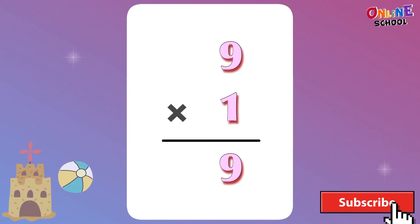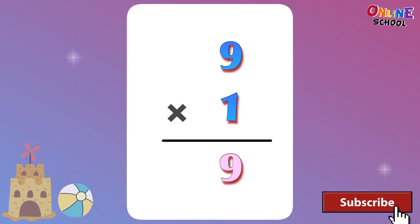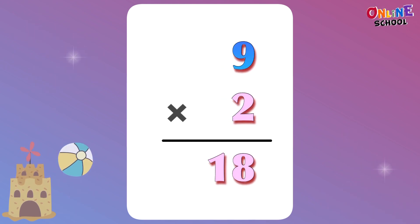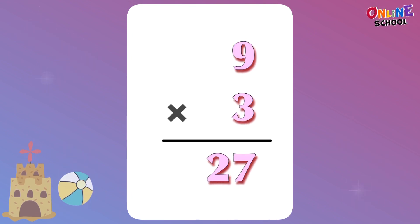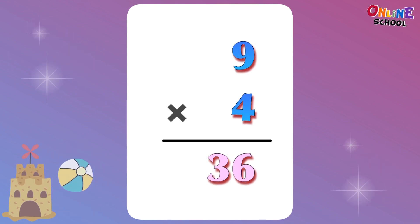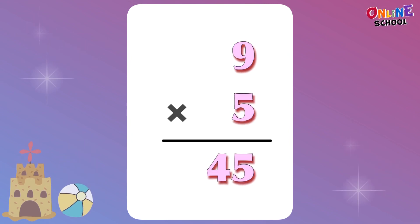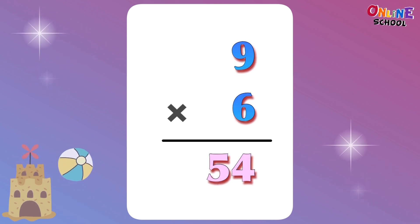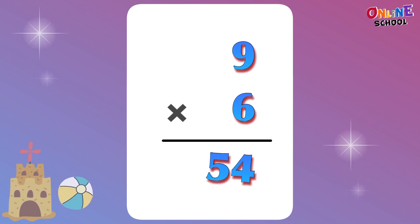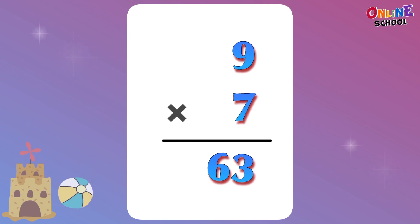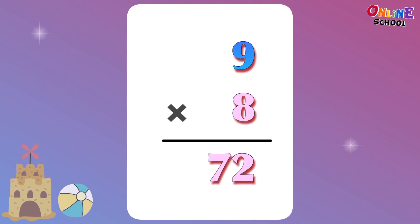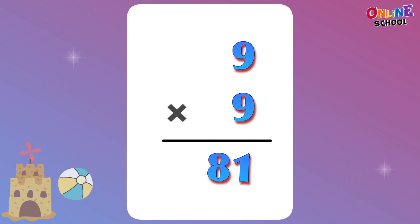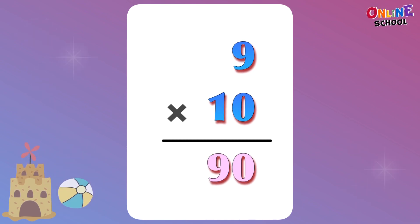9 times 1 equals 9. 9 times 2 equals 18. 9 times 3 equals 27. 9 times 4 equals 36. 9 times 5 equals 45. 9 times 6 equals 54. 9 times 7 equals 63. 9 times 8 equals 72. 9 times 9 equals 81. 9 times 10 equals 90.